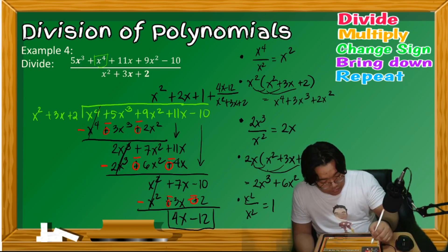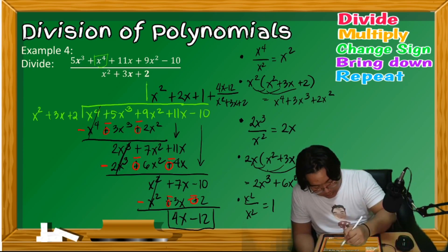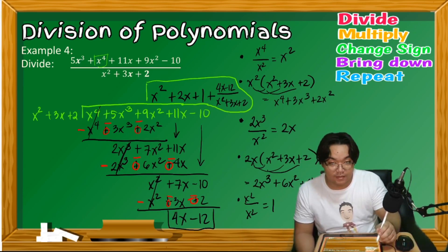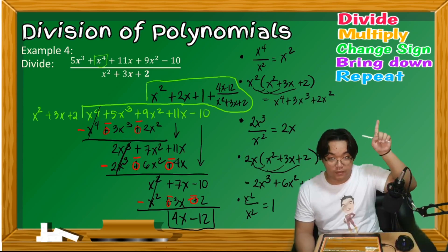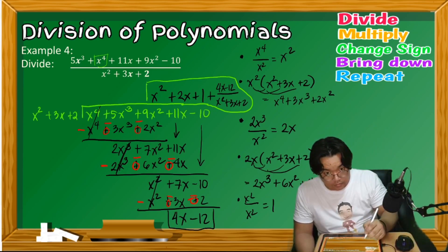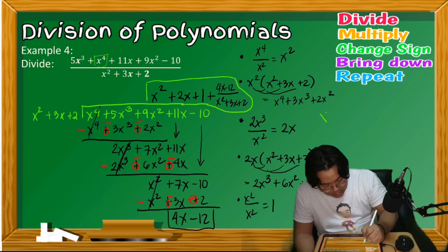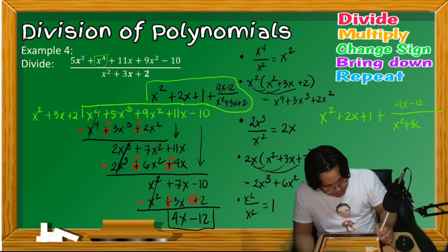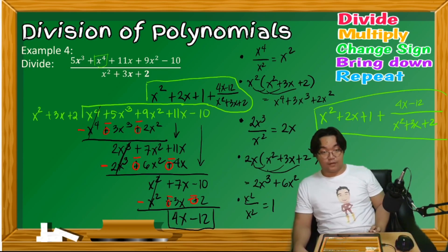The final quotient is x² + 2x + 1 plus the remainder (4x − 12) over the divisor x² + 3x + 2. That is the complete quotient for this polynomial division.